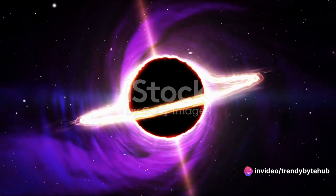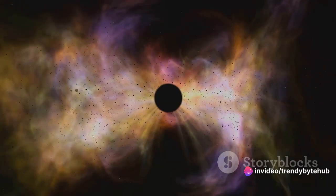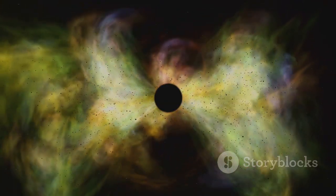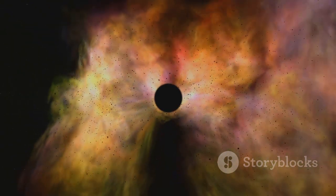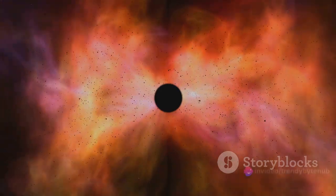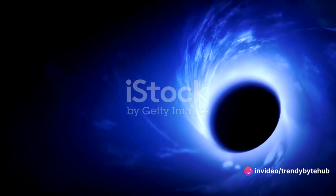But how do we detect something that's essentially invisible? The answer lies in its interaction with nearby matter. Stars near Sagittarius A asterisk behave differently, orbiting at high speeds due to the immense gravitational pull. By observing these stars, astronomers can infer the presence and mass of the black hole.